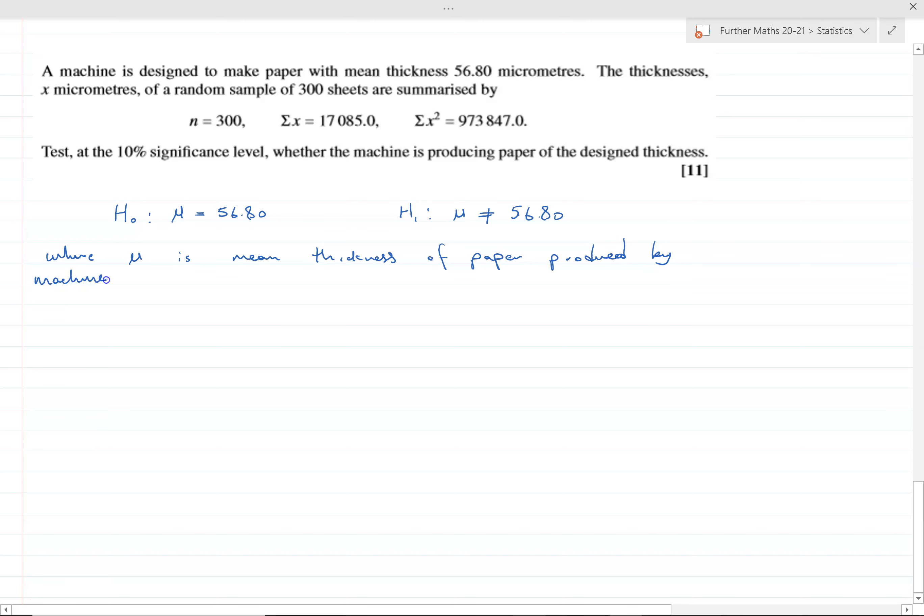We need to work out the actual estimate for the mean value. x̄ equals the sum, which is 17085.0 divided by 300. That equals 56.95.